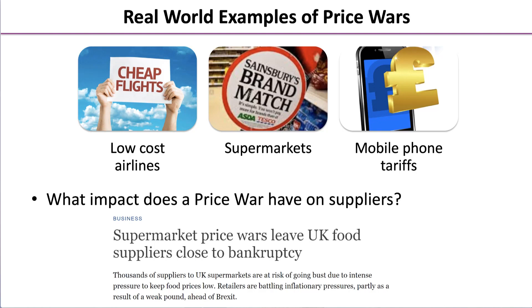But what impact does a price war have on suppliers? On screen there's a story: 'Supermarket price wars leave UK food suppliers close to bankruptcy.' As firms like Tesco and Sainsbury's try to offer consumers the cheapest possible prices, one way they do this is by exerting monopsony power on suppliers — driving down the prices they pay for items like milk and eggs — which is having a negative impact and could force some suppliers to leave the market.